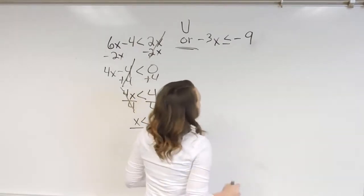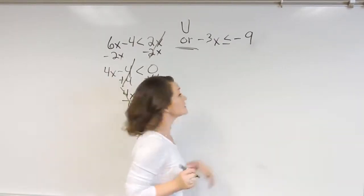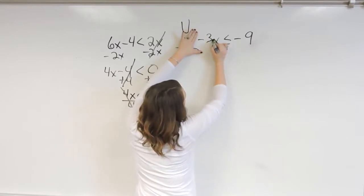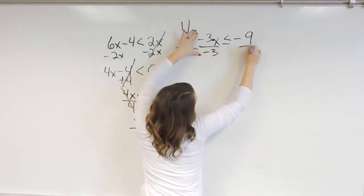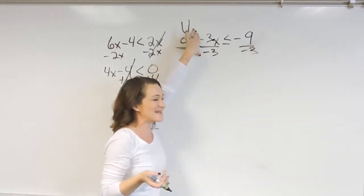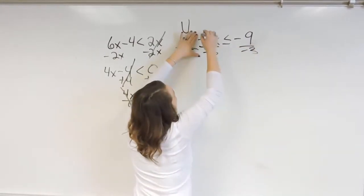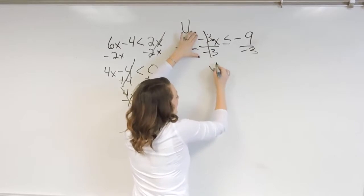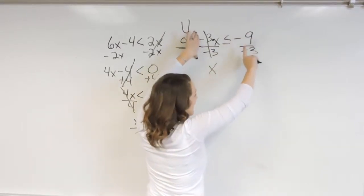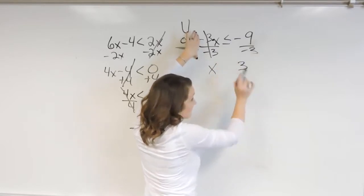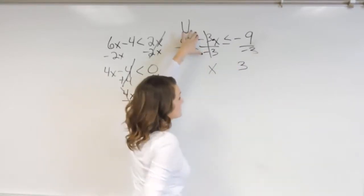So solving this inequality here, it's just a one-step inequality that we need to solve. So remember that this is a negative 3x, so the opposite would be to divide both sides by negative 3. Negative 3 divided by negative 3 cancels, leaving us with an x. On the right-hand side, negative 9 divided by negative 3 is a positive 3. So negative over negative is a positive.